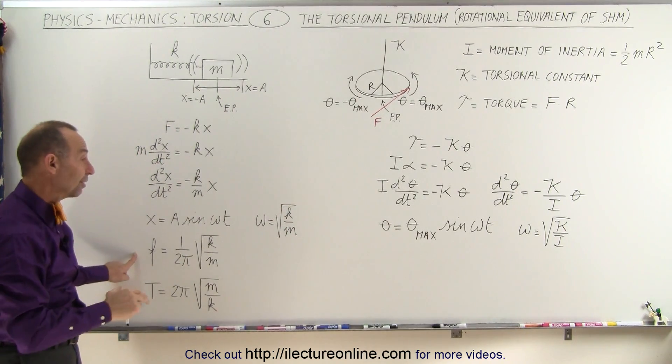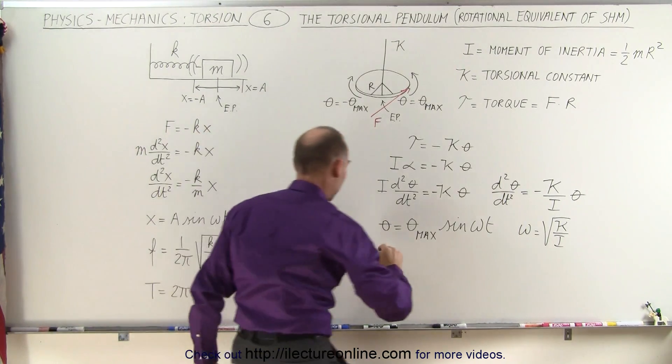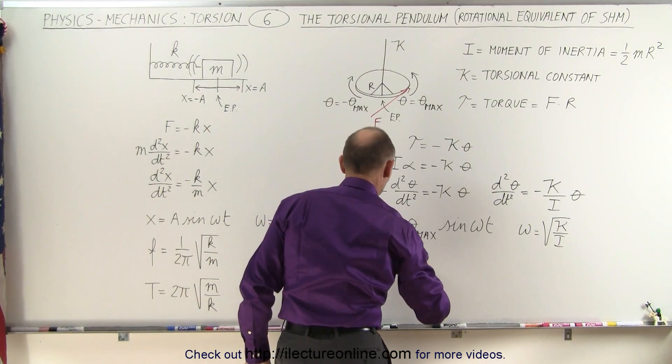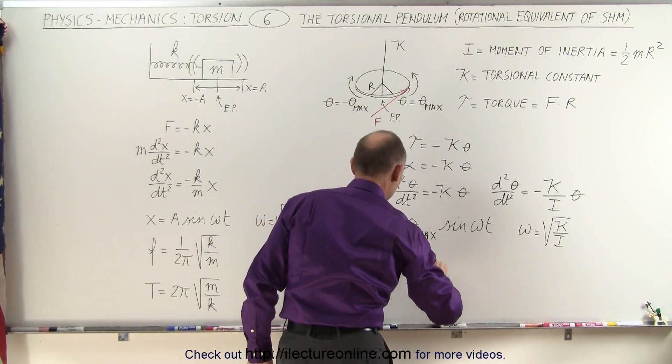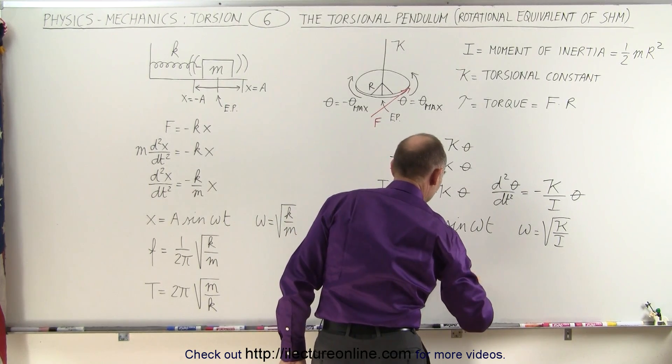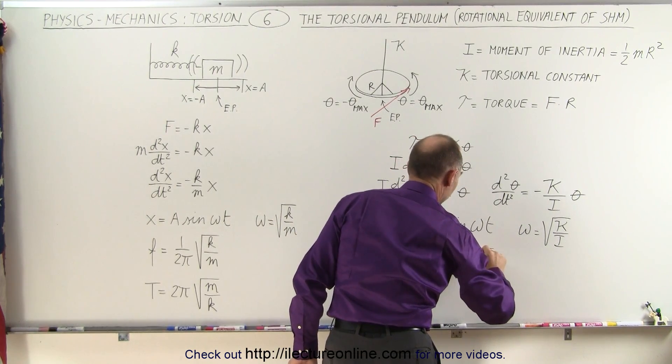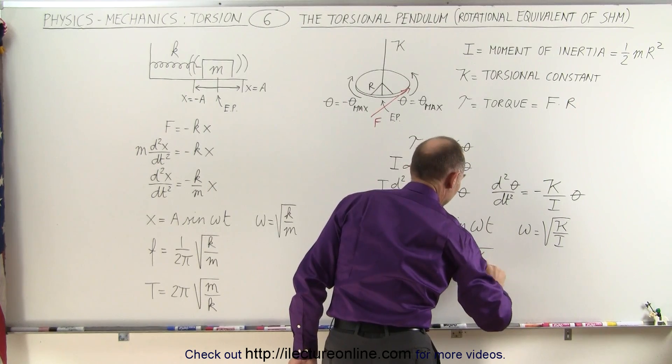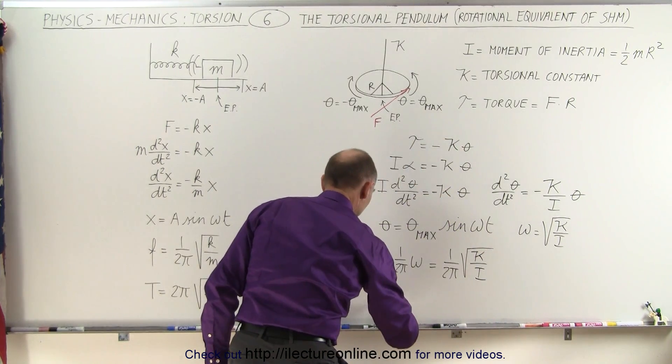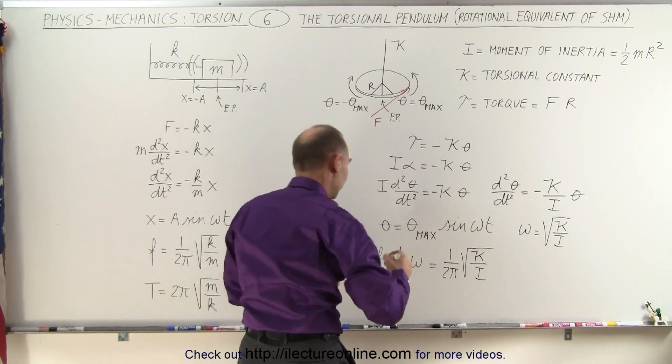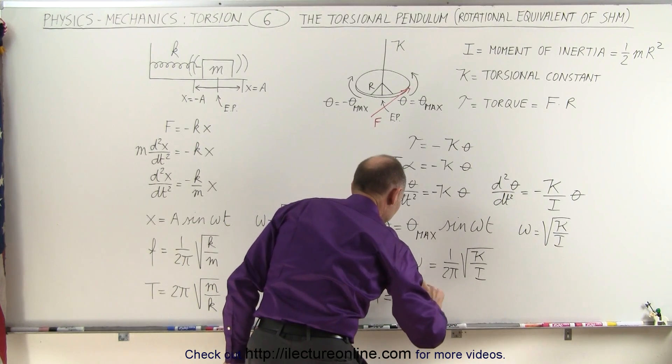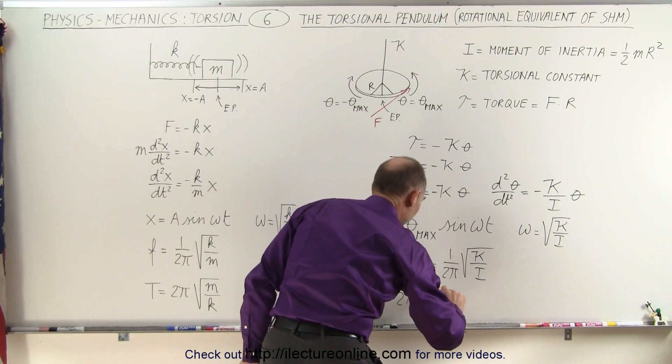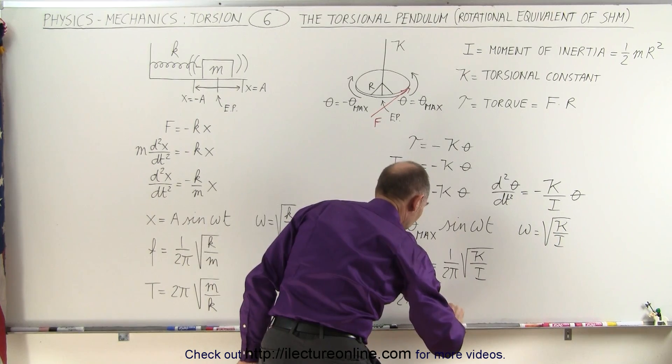Now what we can say is, therefore, that the frequency, which is equal to 1 over 2 pi times omega, which is equal to 1 over 2 pi times the square root of the torsional constant divided by the moment of inertia, and that also means that the period, which is the inverse of that, is 2 pi times the square root of the moment of inertia divided by the torsional constant.